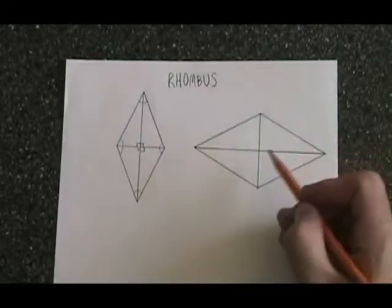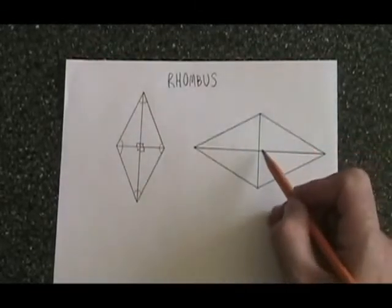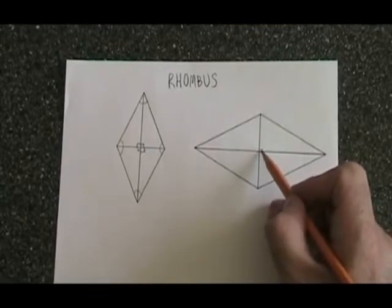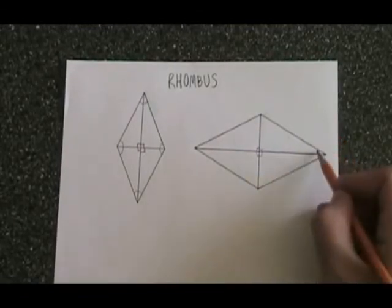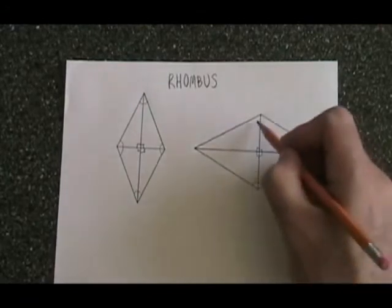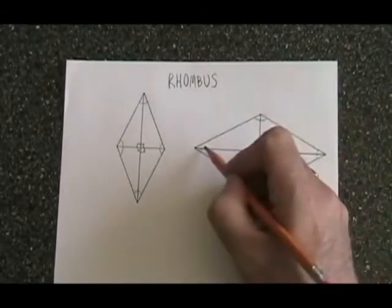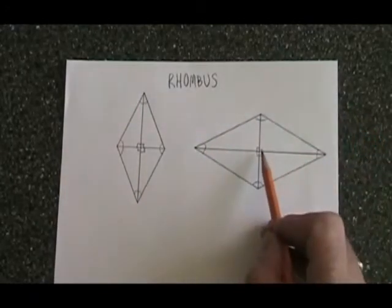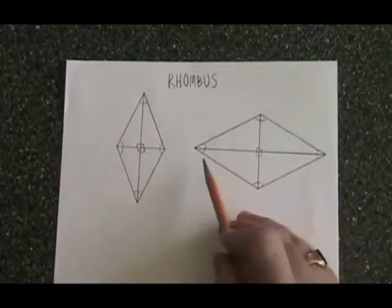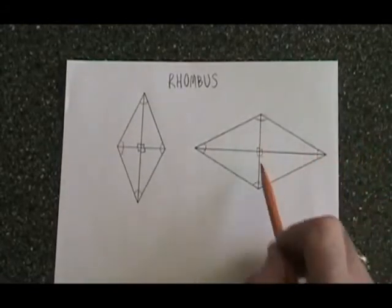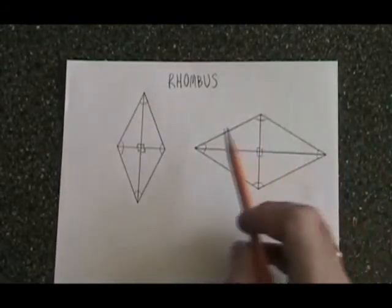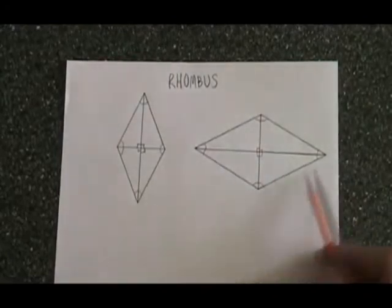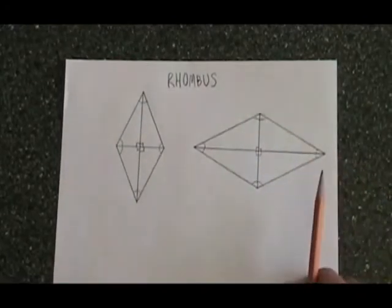So to review, in this rhombus, these angles in the middle all have to be 90 degree angles. The angles on the outside have to add up to 360 degrees. The diagonals cross each other at right angles, but the diagonals are not equal in length, and the sides are all equal in length.